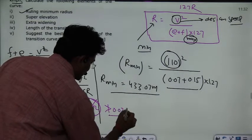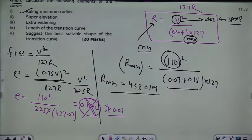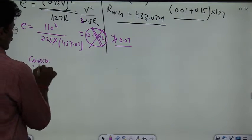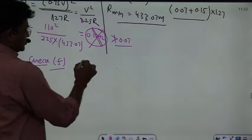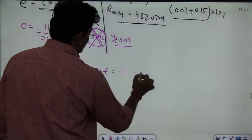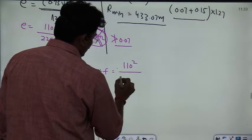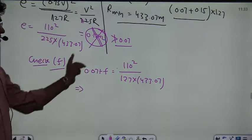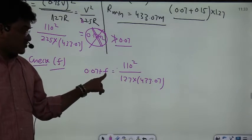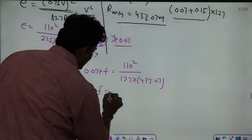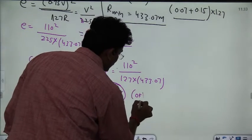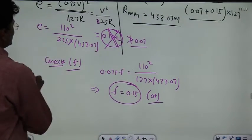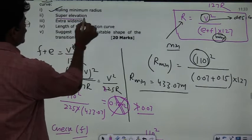Since the calculated super elevation of 0.1242 exceeds the maximum permissible value of 0.07, super elevation cannot be provided beyond this limit. Therefore, the super elevation is capped at the maximum value of 0.07. Checking with e = 0.07 and the radius 433.07, we verify that F = 0.15, which is within the maximum limit for lateral friction.